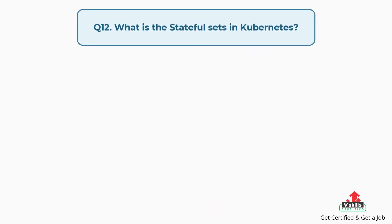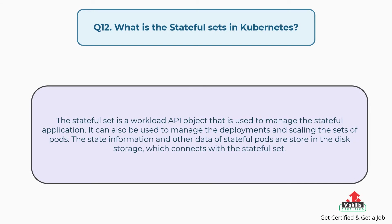Question number twelve: What is the stateful set in Kubernetes? The stateful set is a workload API object that is used to manage the stateful application. It can also be used to manage the deployments and scaling the sets of pods. The state information and other data of stateful pods are stored in disk storage, which connects with the stateful set.